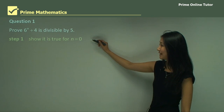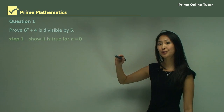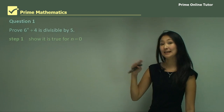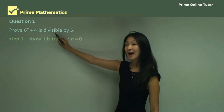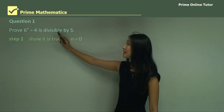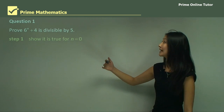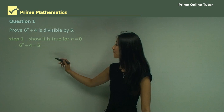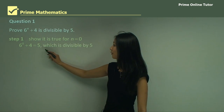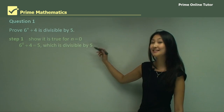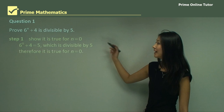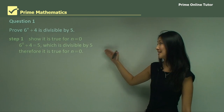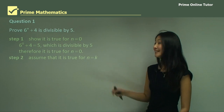The first step is to show it's true for the initial value of n — that's going to be the lowest integer that satisfies the expression. So we start off by substituting in zero. Six to the power of zero is one, and one plus four equals five, which is definitely divisible by five. So we can say therefore it is true for n equals zero.